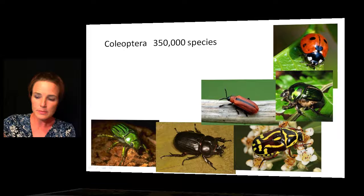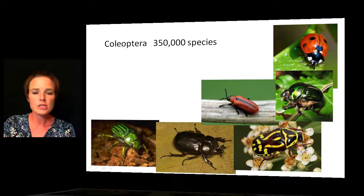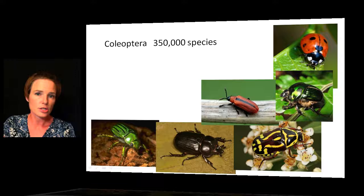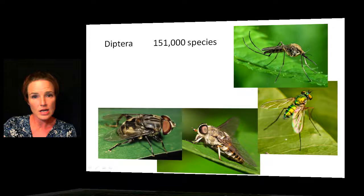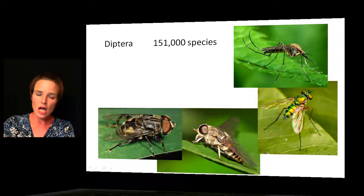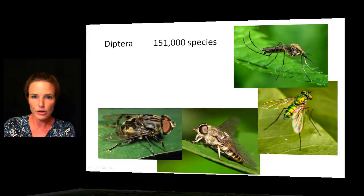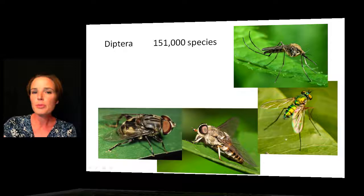Beetles occupy different habitats and have different food sources. Some feed on leaves, some are decomposers, and a number of them carry diseases to plants and to animals. Another large insect order is Diptera, with 151,000 recognized species — this includes the flies and mosquitoes. One significant feature is that they have very well-developed compound eyes, giving them very good sight. They also have a special pair of balancing organs that help greatly with flight.